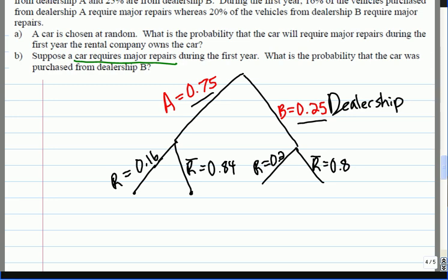If I know I'm in dealership A, these are the probabilities that I need repairs or no repairs. If I'm in dealership A, so this is what the branches are weighted. And it wants to know if a car is randomly chosen, what's the probability that it needs major repairs? So that's going to be this branch and this branch here.